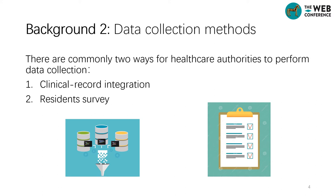Second, the data structure and database design might differ across multiple clinics or hospitals, increasing the difficulty and cost of data linkage. For health authorities that adopt resident surveying, they need to recruit a representative group of residents and collect data via interviews or self-administered questionnaires. In order to minimize bias, the number of samples shall be large enough with appropriate demographic distributions. Therefore, this process is time-consuming and incurs high costs, including labor costs for survey administrators and incentive-based payments for survey participants.